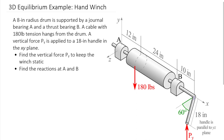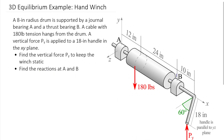Off the far end we have an 18-inch handle. This handle is currently sitting 60 degrees below the x-z plane, and the handle itself is perpendicular to the arm. As you swing the handle around, it swings in an arc parallel to the y-z plane. The system is static and we want to find force P to keep the overall system in equilibrium. As we add force P we'll also pick up some reactions at A and B.